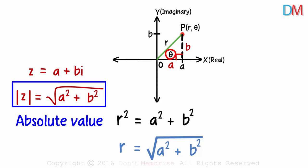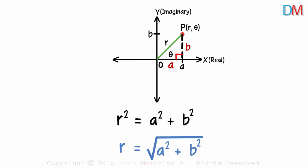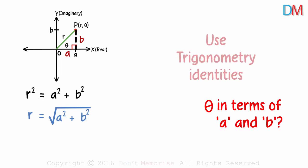What is theta then? It's called the argument of z, which can also be written like this. Now that we know how to represent r in terms of a and b, can you try and derive theta in terms of a and b? Let me give you a hint. Use trigonometry identities in this triangle.